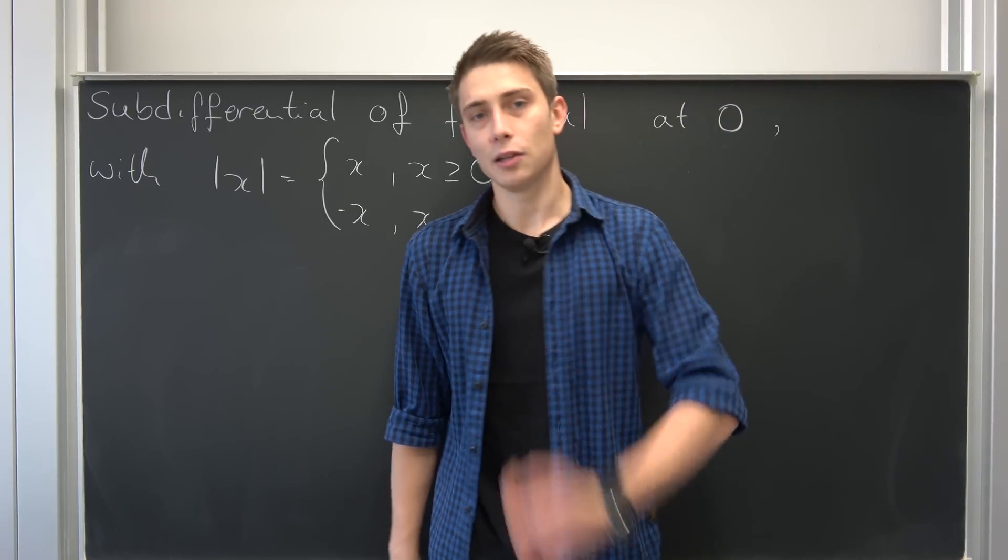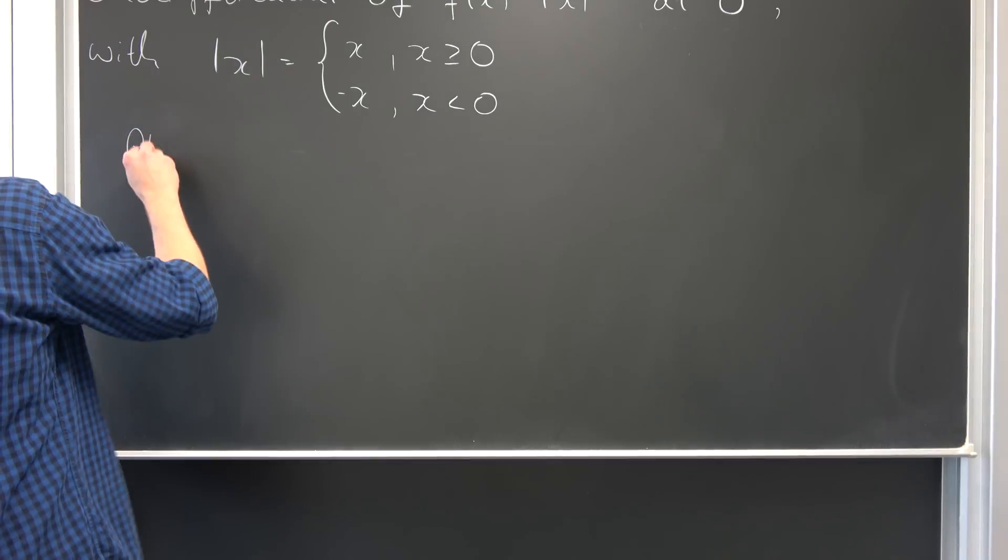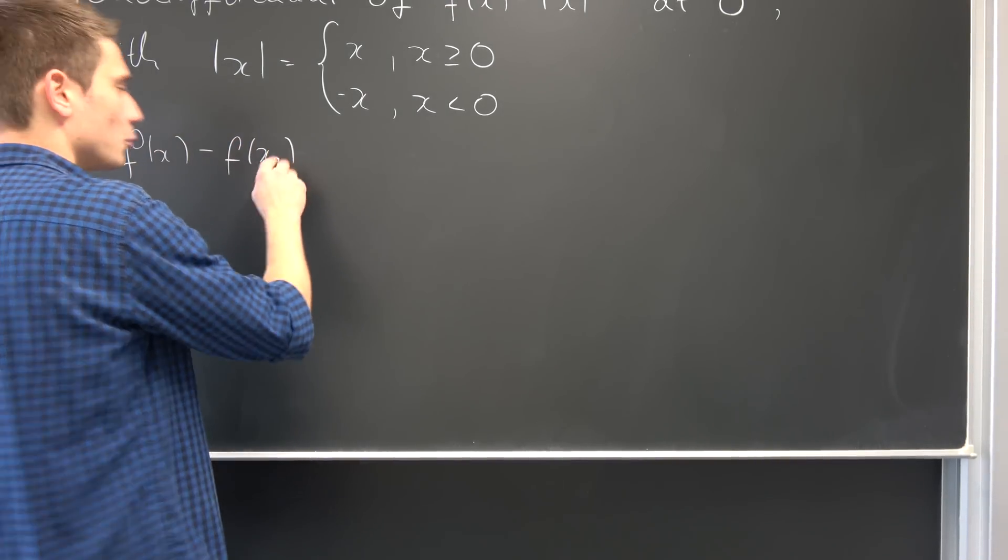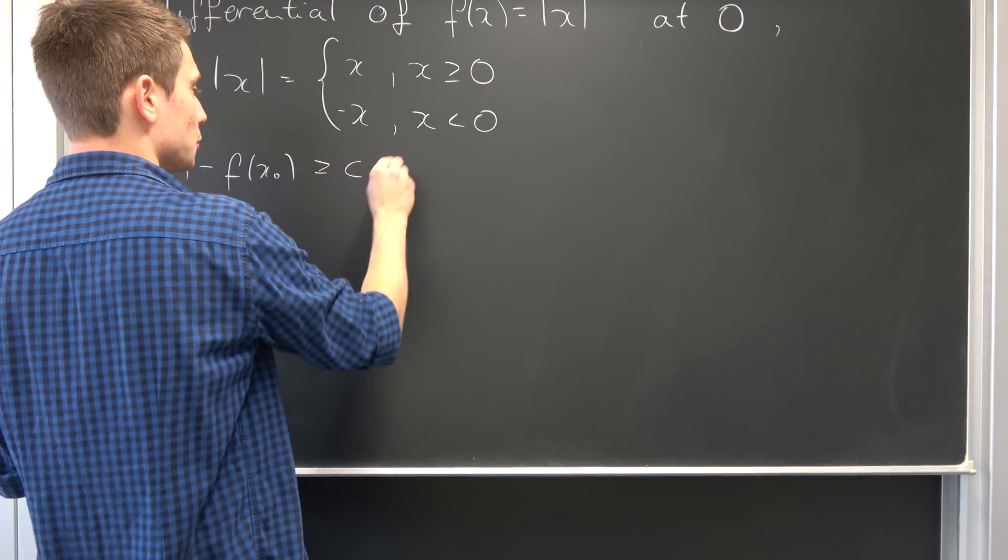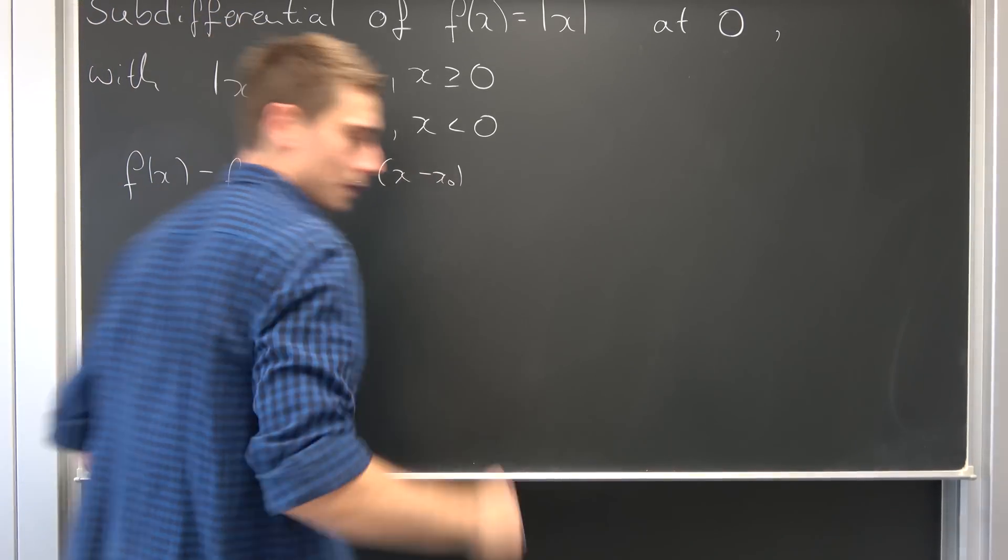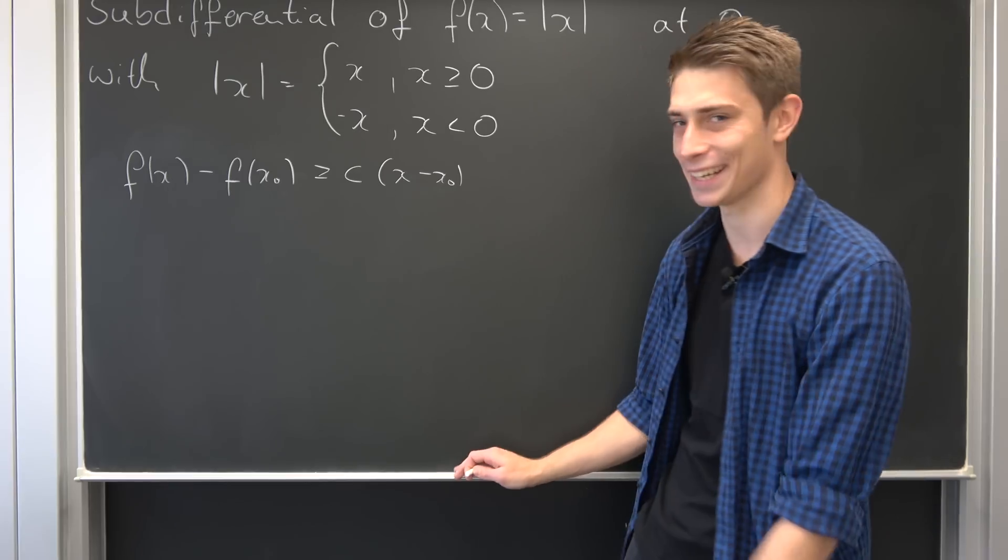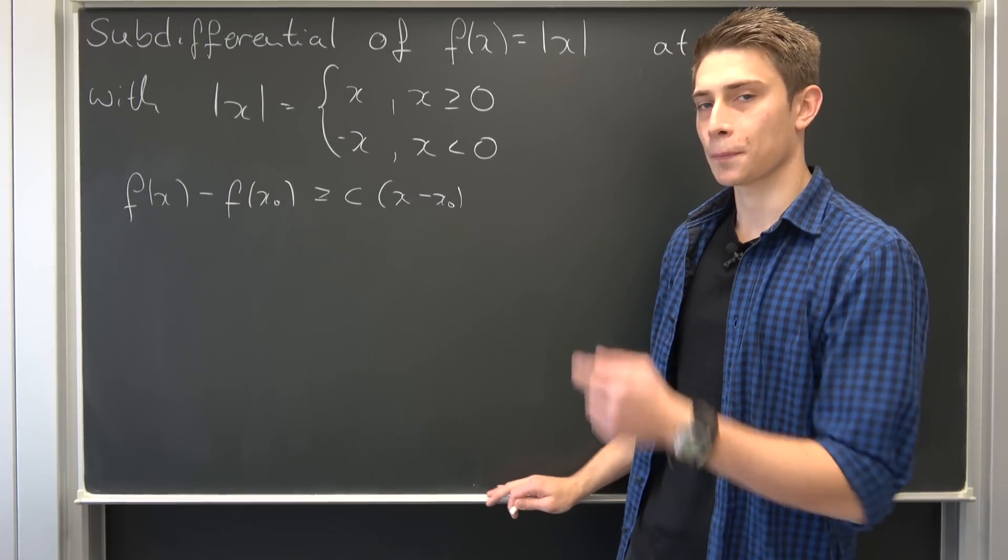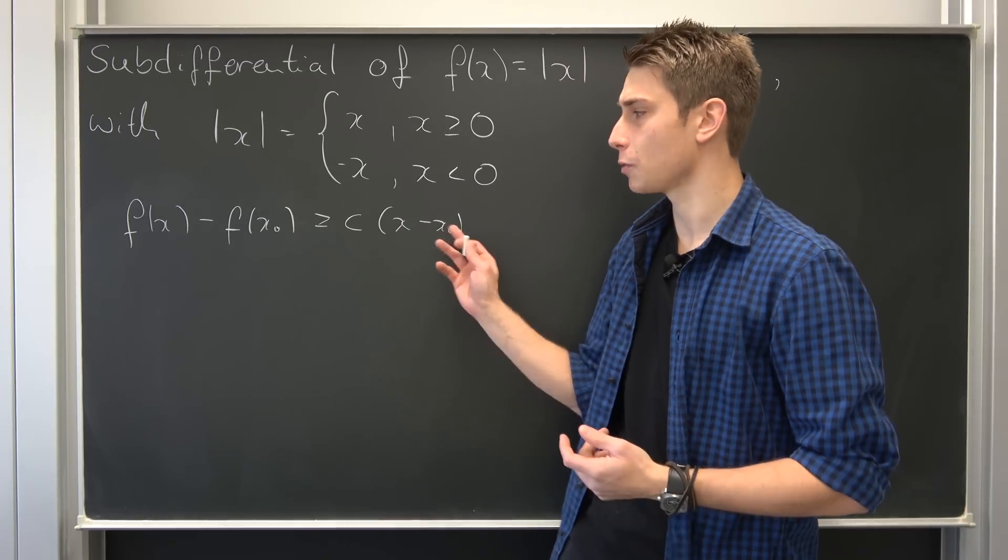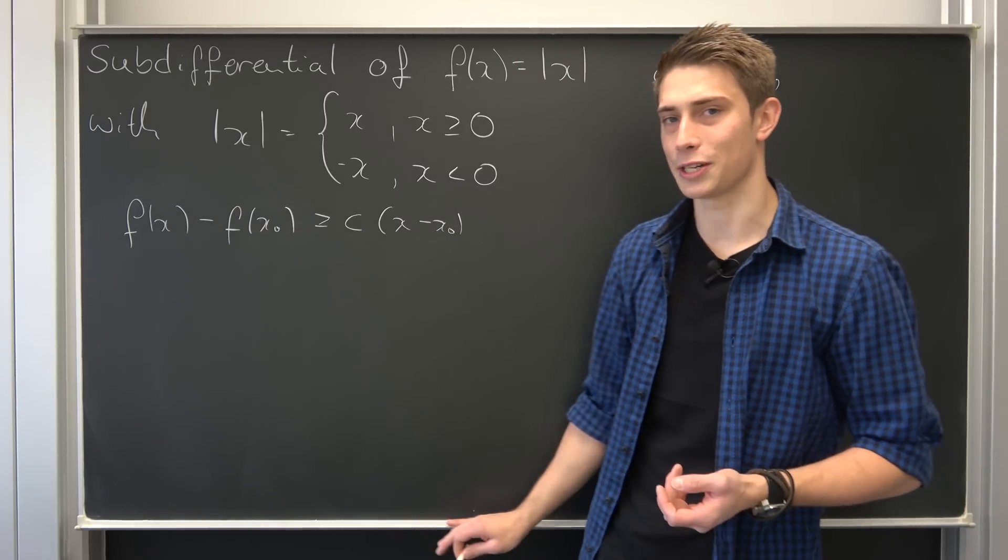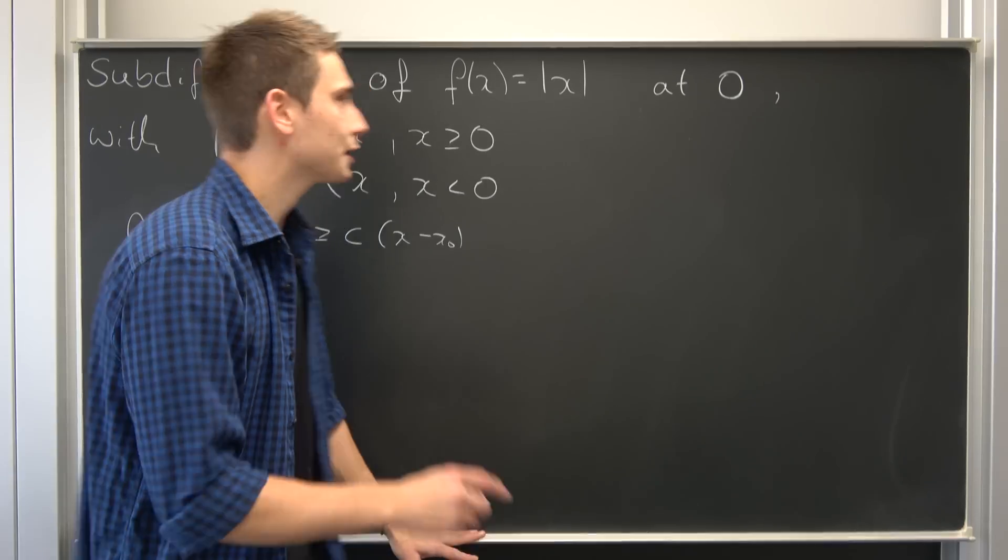Now you could ask yourself what the hell is a sub-derivative exactly. Well, let's take a look at something: f(x) - f(x_0), where x_0 is the spot that causes us problems, zero in this case, is greater or equal to c times (x - x_0). And you see this c? I hope you can see what I did there. This is exactly our sub-derivative. We can find many sub-derivatives which satisfy this inequality right here.